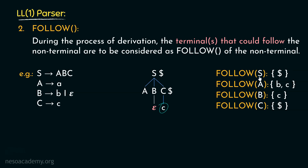So basically, during the process of derivation, the terminal or terminals that could follow the non-terminal are to be considered as follow of that particular non-terminal. In case of S, it is the dollar symbol. For A, there are two terminal symbols 'b' and 'c' which follow the non-terminal A. Coming to B, we have the terminal symbol 'c'. And finally, for capital C, we also have the dollar symbol. Do remember, in both the cases of first and follow functions, we are actually looking for the terminals. And another thing to note: in follow, we never include epsilon.